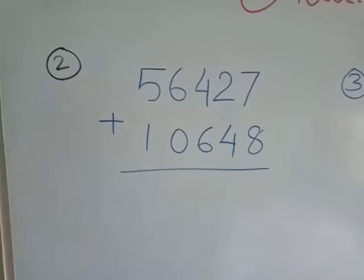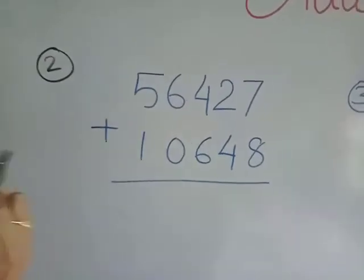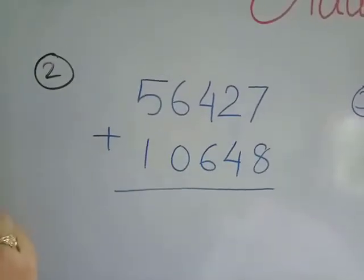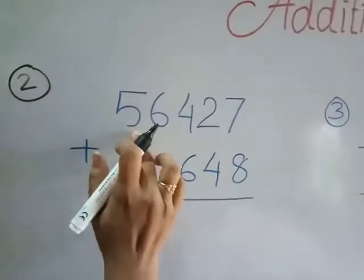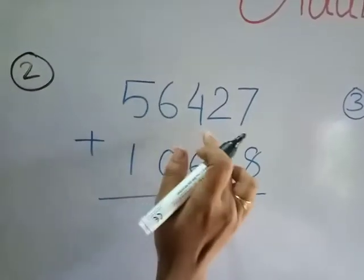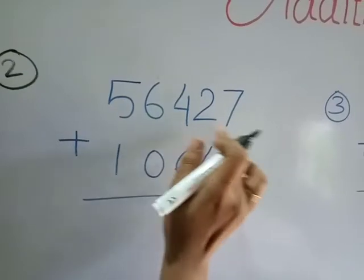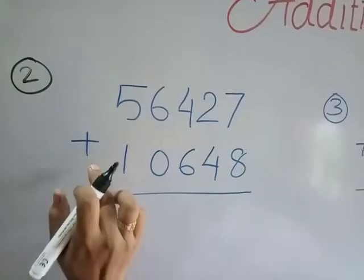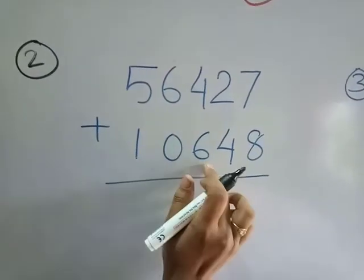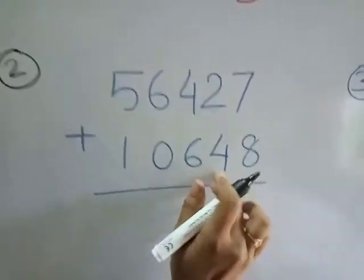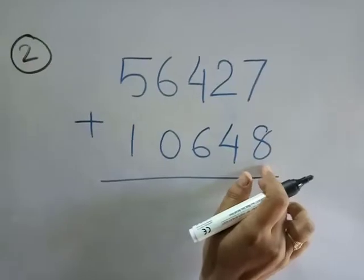Okay student, look at the second question. Fifty-six thousand, four hundred and twenty-seven plus ten thousand, six hundred and forty-eight.